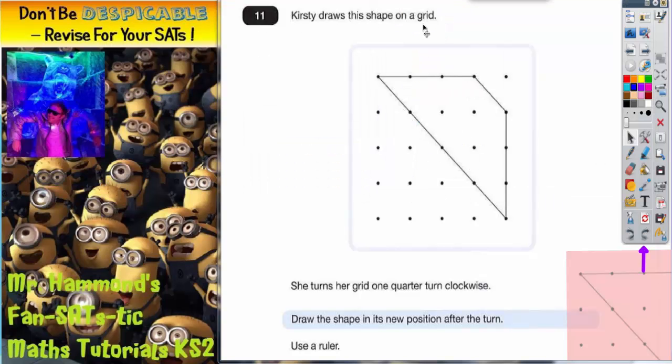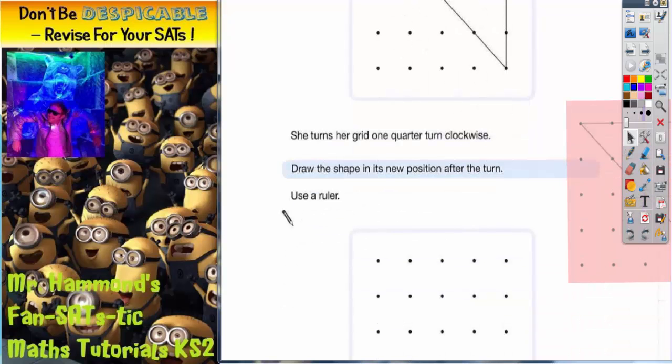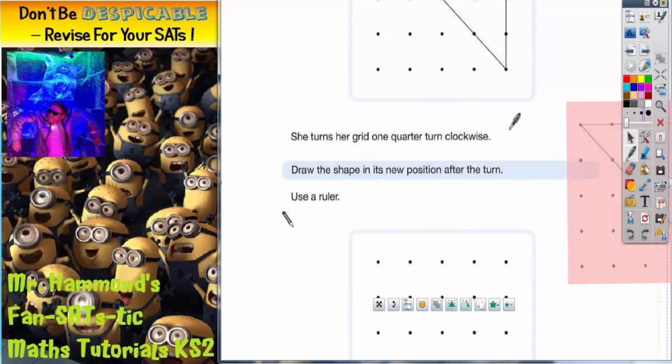Question 11 says Kirsty draws this shape on a grid. It then says she turns her grid one quarter turn clockwise. Remember, clockwise goes this way around in the same direction as the hands of a clock - that's why it's called clockwise.